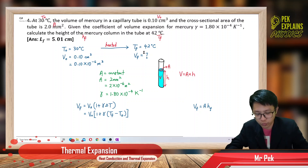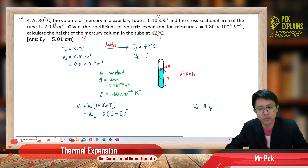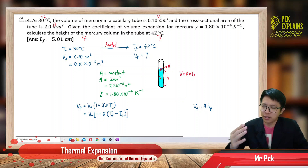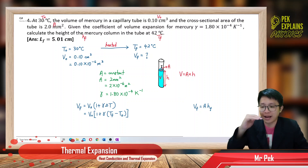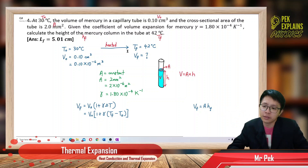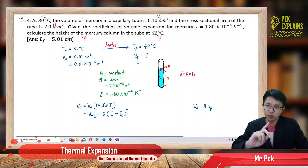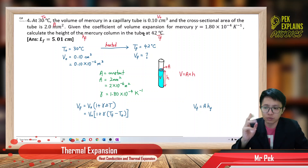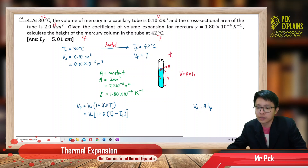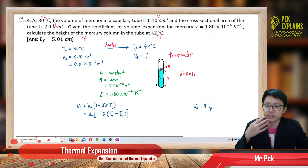This capillary tube with mercury is actually like a thermometer. When you heat it from 30 degrees Celsius to 42 degrees Celsius, of course the volume of the mercury will expand. When it expands, the mercury will rise — the height of the mercury column in the tube will rise. That's what we want to find: the final height. But first, since we already have the initial volume, to find the final height we need to find the final volume.